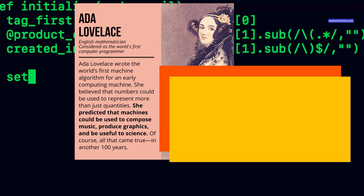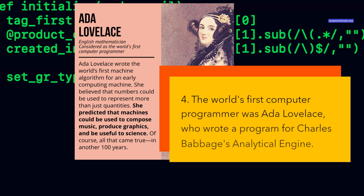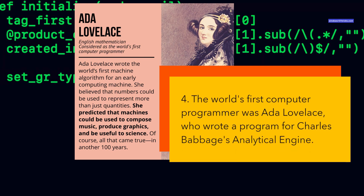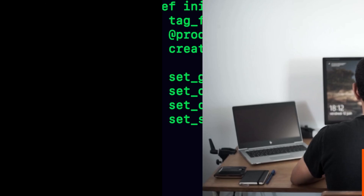The world's first computer programmer was Ada Lovelace, who wrote a program for Charles Babbage's Analytical Engine. Ada Lovelace was a mathematician and the daughter of poet Lord Byron. She met Charles Babbage in 1833 and became fascinated by his idea of creating a machine that could perform any kind of calculation. She wrote an algorithm for the Analytical Engine that could calculate the Bernoulli numbers, a sequence of numbers related to number theory. She also predicted that computers could do more than just math, such as creating music and art.